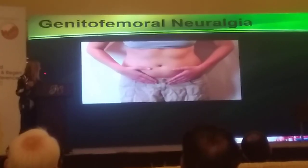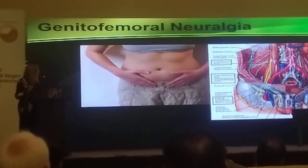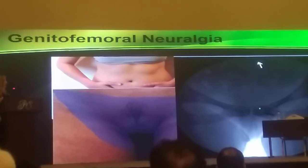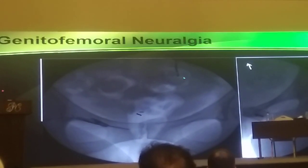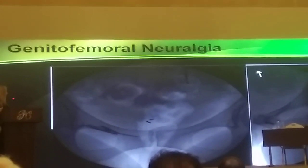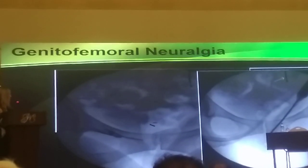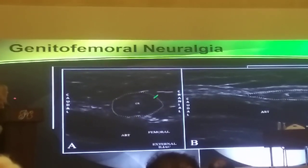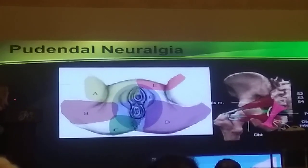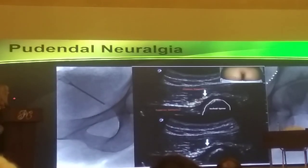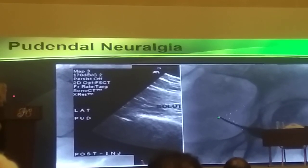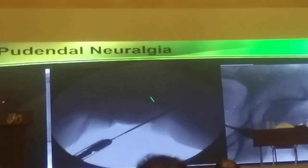For pelvic pain, there is a wide variety involving the ilioinguinal, iliohypogastric, and genitofemoral nerves causing pelvic region pain. The genitofemoral nerve gets trapped at the pubic tubercle — notably, one case involved an Interstim placed for interstitial cystitis when the underlying problem was actually genitofemoral nerve entrapment and pubic cystitis. Under ultrasound, the genitofemoral nerve can be seen next to the femoral artery, and cryoneuroablation is available. The pudendal nerve is one of the most complicated nerves, visible under ultrasound and fluoroscopy at the edge of the ischial spine, with cryoneuroablation as treatment.